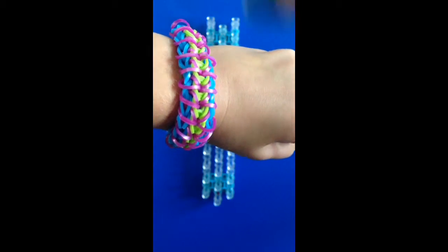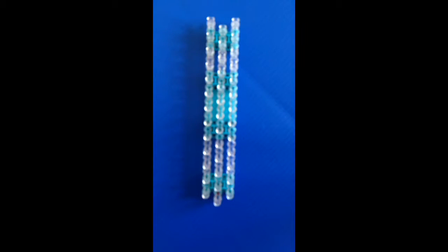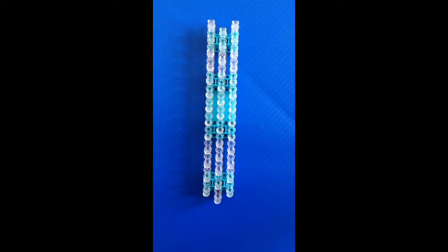The materials you are going to need are three colors of rubber bands and a C-clip, your loom, and a rainbow loom hook or a crochet hook. Today I'll be using this crochet hook.